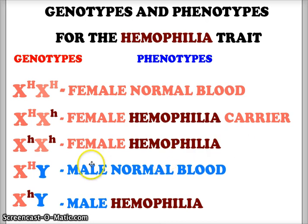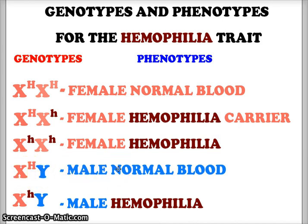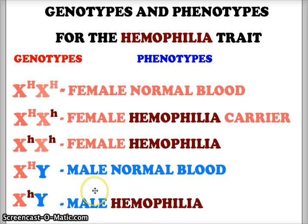For our other two genotypes, X^H Y is a male with normal blood, and X^h Y is a male with hemophilia. It only takes one recessive gene for a male to show the recessive trait.